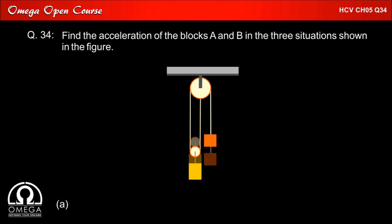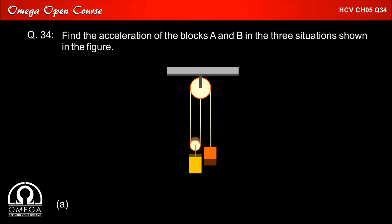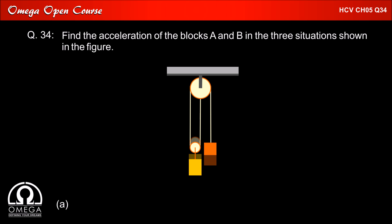Let us look at the setup in part A and first find out the relation between the acceleration of the two blocks. Let us assume that block B goes down while block A rises up. As can be seen in the animation, if block B moves down by X, the pulley to which it is hanging also moves down by the same distance. The pulley carries strings on both its sides, so in order to move distance X, the pulley needs an extra 2X length of string.